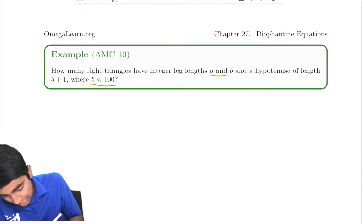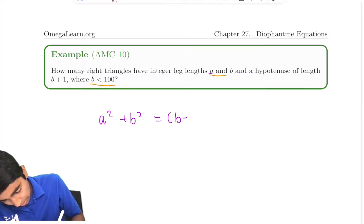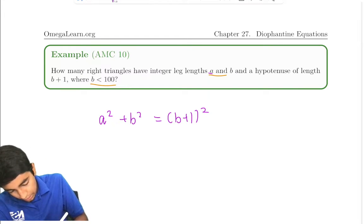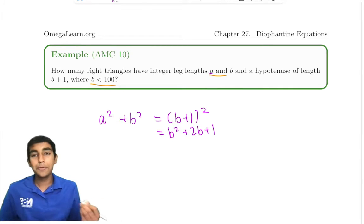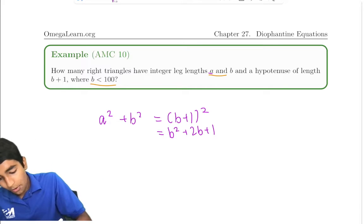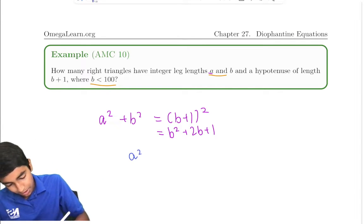We have a² + b² = (b + 1)². Let's expand the right side: b² + 2b + 1. Now, we subtract b² from both sides. And just like that, we're left with a² = 2b + 1.